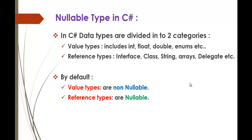Keep in mind that by default, Value Types are Non-Nullable. If you create a variable of a Value Type, the default value in that variable is 0. That's what Value Types being Non-Nullable means. Reference Types are Nullable — if you create a variable of String, which is a Reference Type, the default value is Null. So Value Types are Non-Nullable and Reference Types are Nullable.